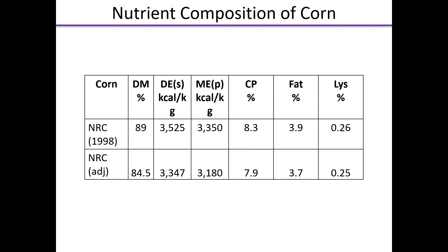Looking at nutrient composition — I like to show this in my classes. The top line is the NRC values for corn for the major nutrients you may be concerned about. On the bottom, I adjusted that to 15.5% moisture, which is typically what we buy and sell corn at in the United States. So if you're thinking you're getting corn at 11 or 12% moisture, chances are that's not happening. The NANP database says 88.1% average dry matter on corn — so 11.9% moisture. And if I go through the hammer mill, I'll probably take off another quarter to half percent moisture — lowering the moisture content of what's put in front of those birds.